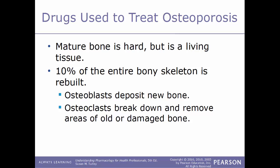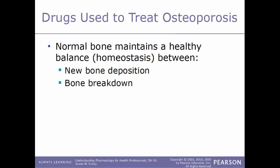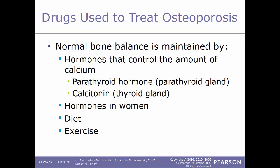Now we move into drugs used to treat osteoporosis. Mature bone is very hard but is a dynamic living tissue — approximately 10% of the skeleton is rebuilt each year. Two main cell types are found within the skeleton: osteoblasts, which build new bone, and osteoclasts, which break down and remove areas of old and damaged bone. Normal bone maintains a healthy balance, or homeostasis, between the amount of bone being deposited and the amount being broken down, as a continual daily process.